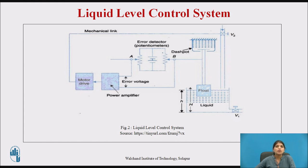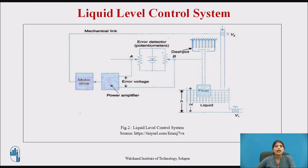This error voltage, produced by arms A and B, is applied to the power amplifier, which actuates the motor to decrease or increase the opening of valve V2 in order to restore the liquid level. The motor drive and valve V2 are connected through a mechanical link. Thus, the control system automatically corrects any deviation between the actual and the desired liquid level in the tank.